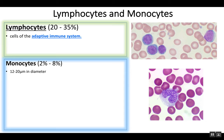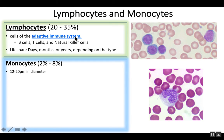The adaptive immune system revolves around lymphocytes to help protect you from pathogens, and it's really good at protecting you against those same pathogens a second or third time you're exposed to them. So the adaptive immune system has what we call memory. There are a number of different types of lymphocytes. The two big ones include the B lymphocytes, or B cells, and the T lymphocytes, or T cells.